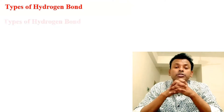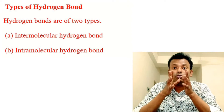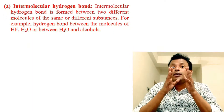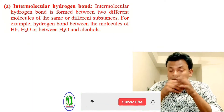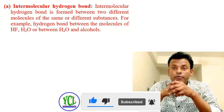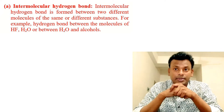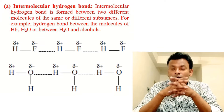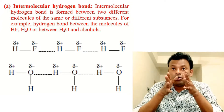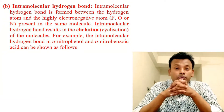Types of hydrogen bonds: hydrogen bonds are of two types — one, intermolecular hydrogen bond, and two, intramolecular hydrogen bond. Intermolecular hydrogen bond is formed between two different molecules of the same or different substance. For example, hydrogen bonds between molecules of HF, H₂O, or between H₂O and alcohol.